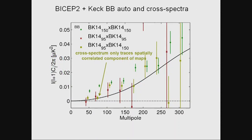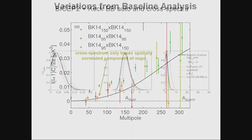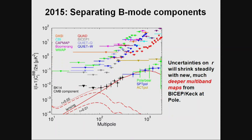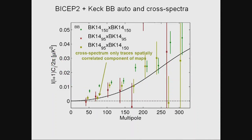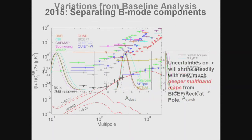Right now it doesn't make sense to observe more at 150 GHz because we've already seen a high signal-to-noise of something, so we need to minimize the uncertainty from component separation, which currently comes from Planck. We also have rather limited sensitivity at 95 GHz — the error bars from the 95 GHz spectrum are much larger than at 150 GHz — so we want to add a lot more 95 GHz observations and improve on dust template sensitivity.